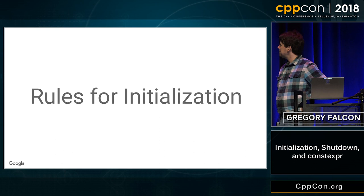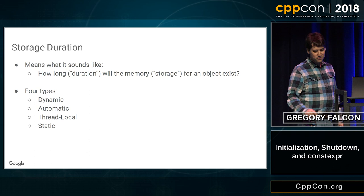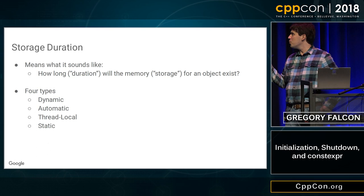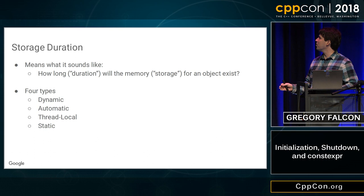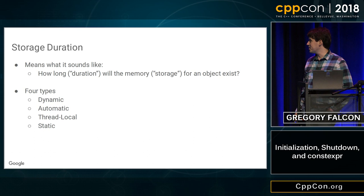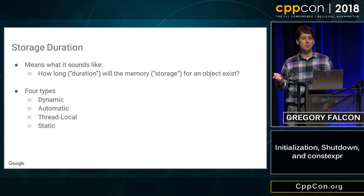So, we'll start by talking about the rules for initialization in C++. Any talk about initialization needs to start with storage duration, which is a term of art. It really means what it sounds like: the storage duration of the object is the duration of the storage — how long is the memory for that object guaranteed to last? There are exactly four types of storage duration defined in the language: dynamic, automatic, thread-local, and static.